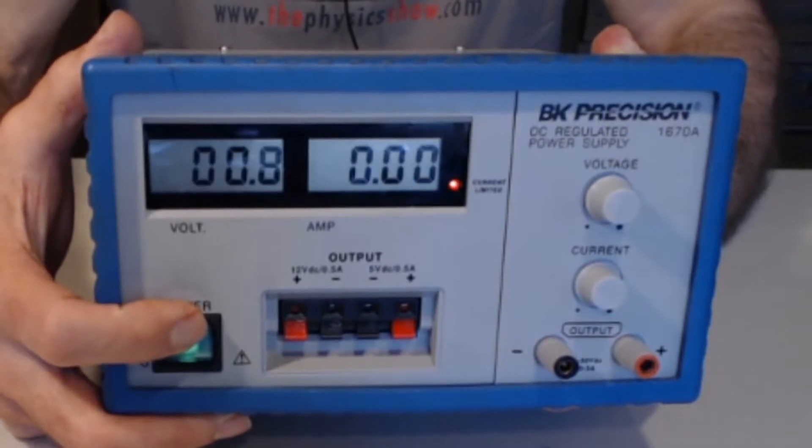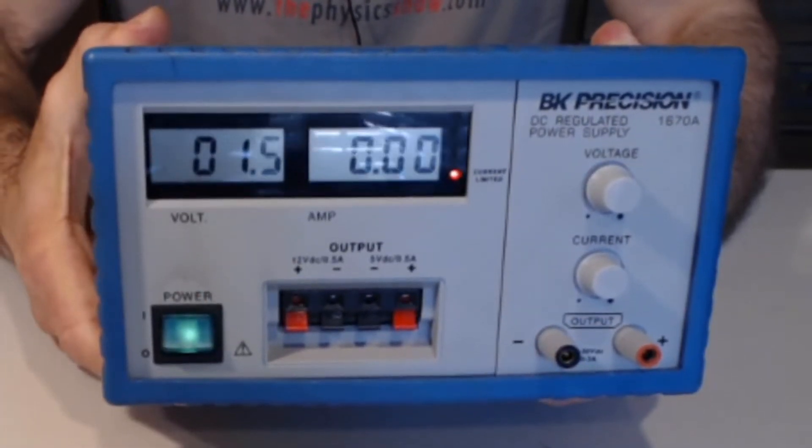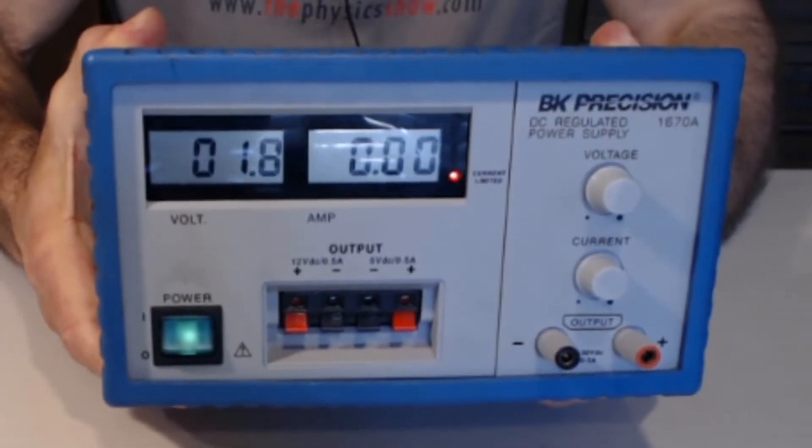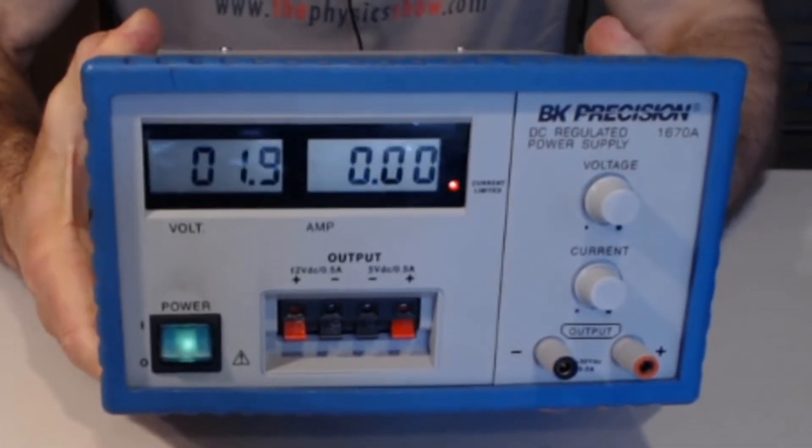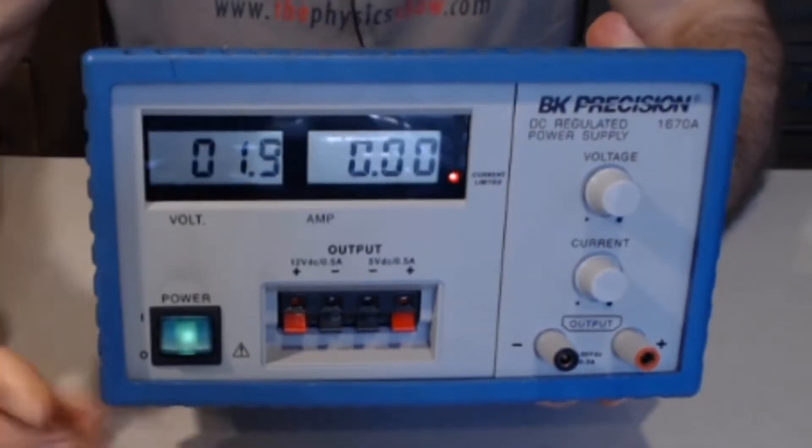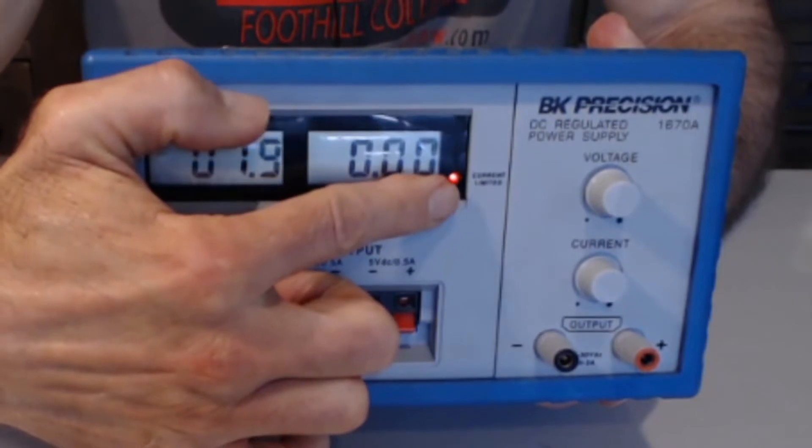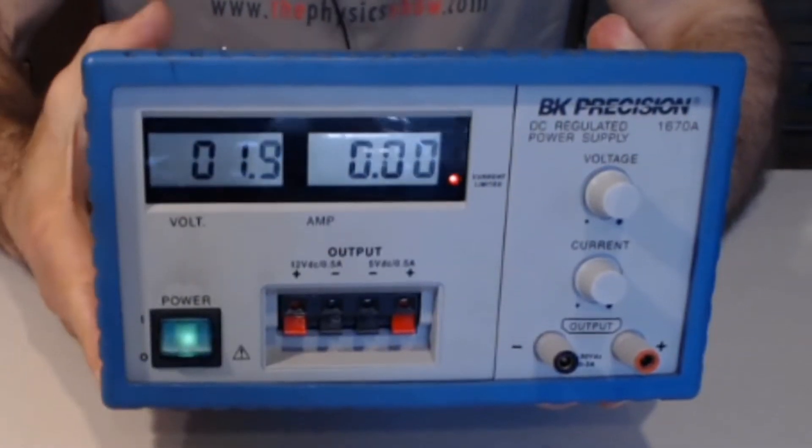So if we turn it on, we get a readout here, volts and current. Now the little red light next to the current tells us that we're current limited.